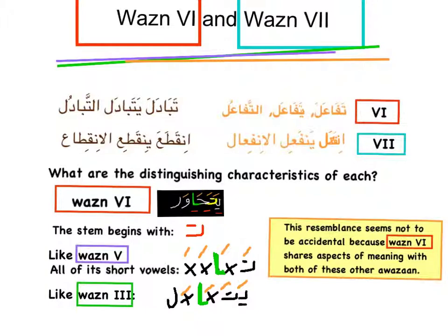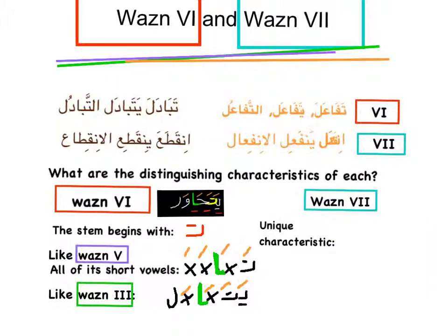This resemblance between wazn hamza and wazn 6 is not accidental, because it shows aspects of meaning — and it doesn't just happen with hamza. It happens with other forms too. For wazn 7, the unique characteristic is that it has a 'noon' in the pattern in the final form.